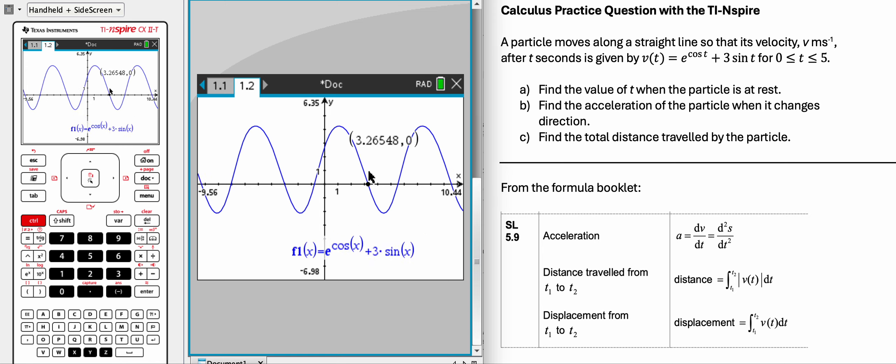All right, now, part B is find the acceleration of the, and by the way, this is the answer, 3.27 for part A. So part B, find the acceleration of the particle when it changes direction.